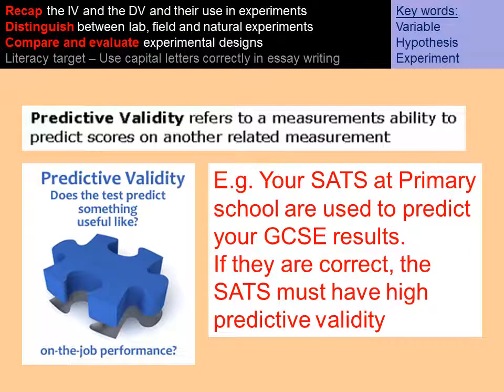Predictive validity refers to a measurement's ability to predict scores on another related measurement. For example, SATs at primary school are used to predict your GCSE results. If your SATs are correct and you get the same GCSE results, then your SATs are said to have high predictive validity — they predicted your outcome at GCSE.